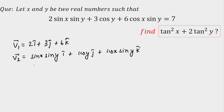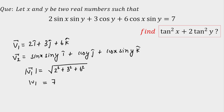Now let's calculate the modulus of v1. The magnitude of v1 will be √(2² + 3² + 6²) = √49 = 7. So |v1| = 7.